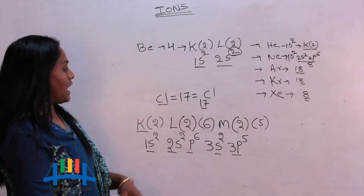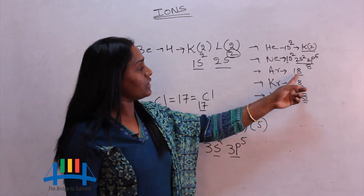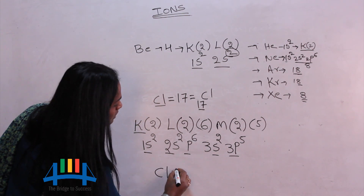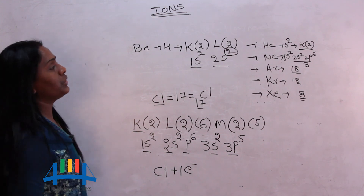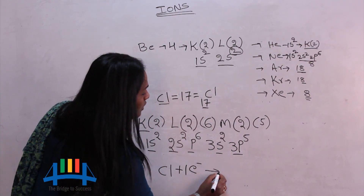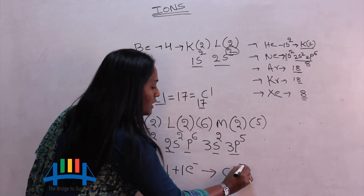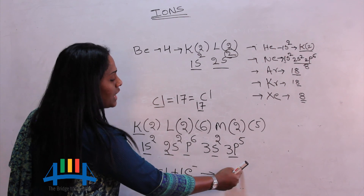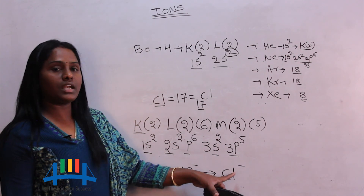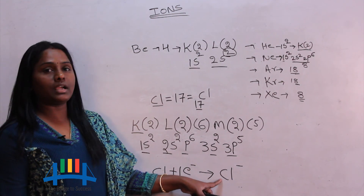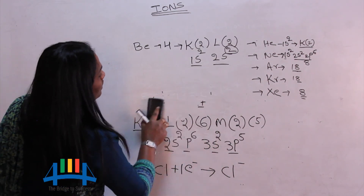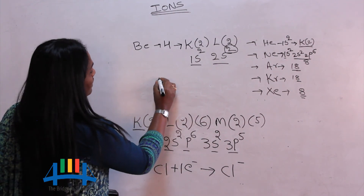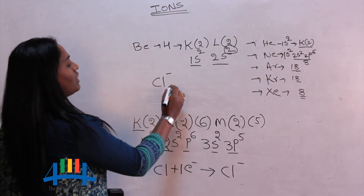Chlorine gains one more electron to reach argon's configuration. After gaining one electron, I write chlorine with a negative sign — Cl⁻. This negative sign indicates it has gained one electron into its outermost shell to become like argon. After gaining that one electron, it becomes an anion.